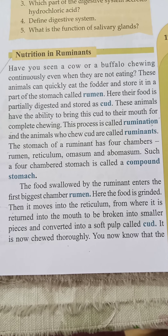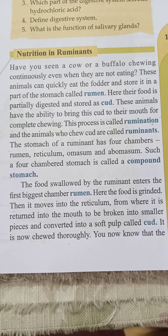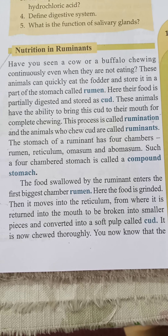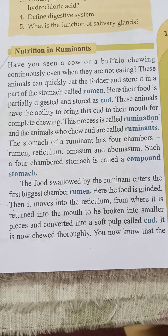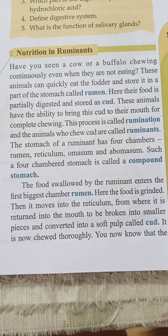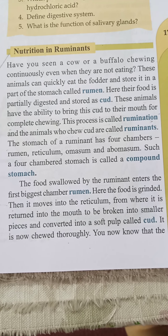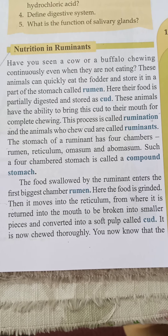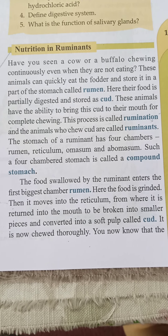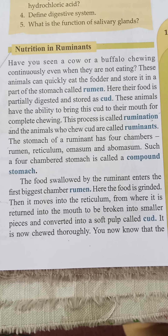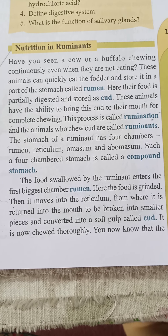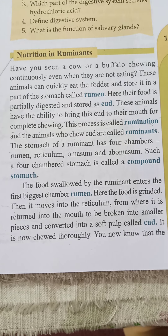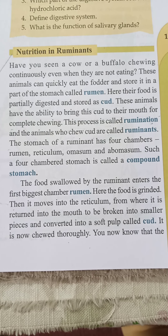This process is called rumination — اور اس process کو ہم rumination کہتے ہیں۔ جیسا کہ human stomach میں ایک ہی chamber ہوتا ہے، لیکن جو ruminants ہیں ان کے stomach میں four chambers ہوتے ہیں: rumen، reticulum، omasum، اور abomasum۔ Such a four-chambered stomach is called a compound stomach — چونکہ اس میں چار حصے ہیں اس لیے ایسے stomach کو compound stomach کہتے ہیں۔